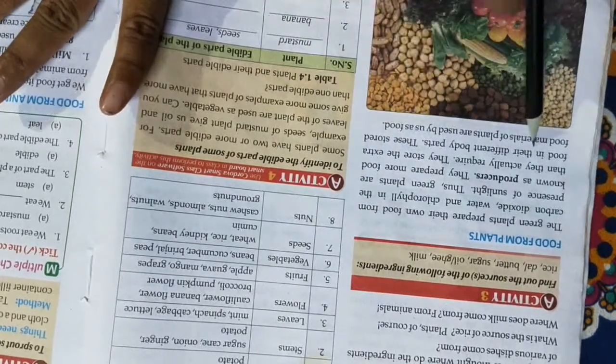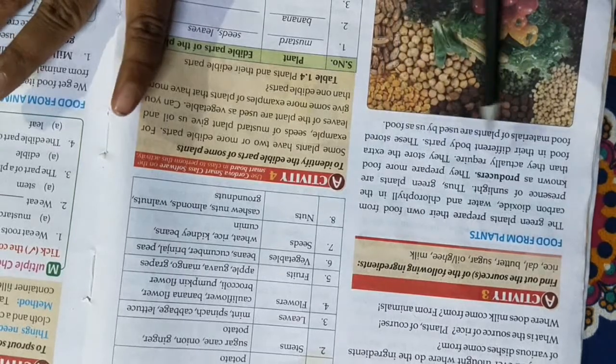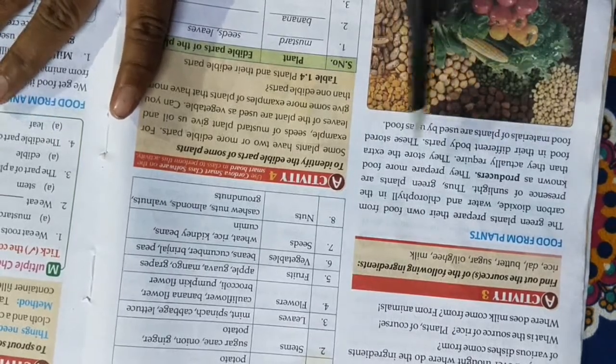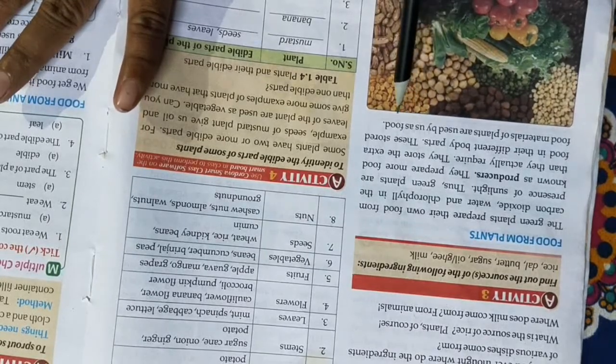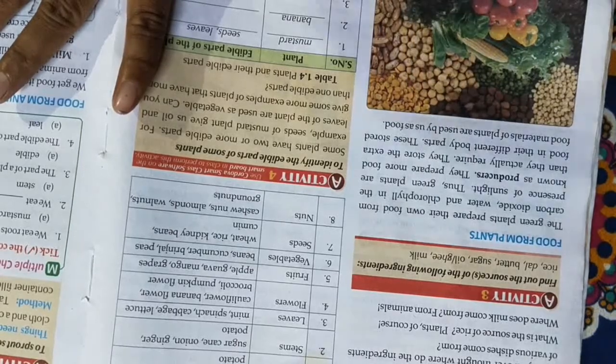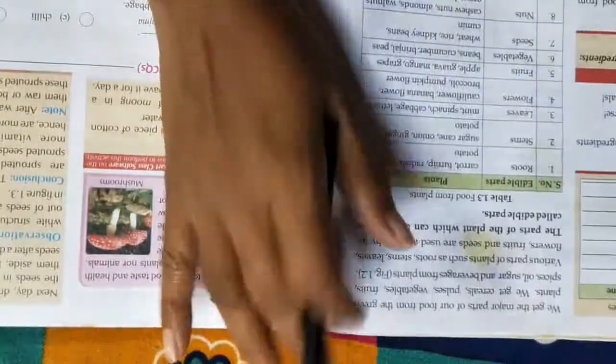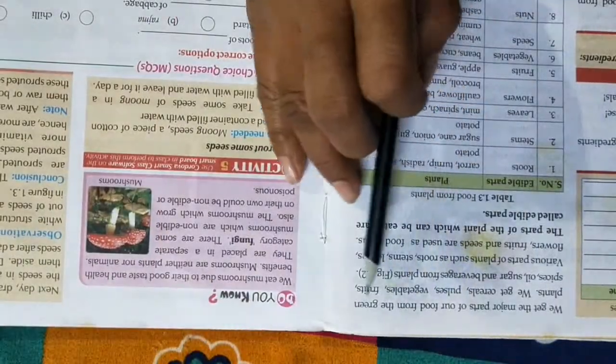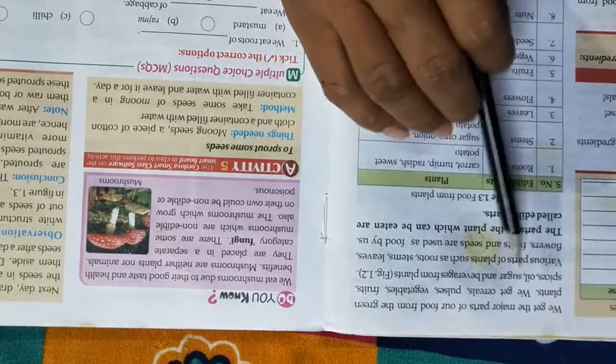They store the extra food in their different body parts. We get major parts of our food from green plants. We get cereals, pulses, vegetables, fruits, spices, oil, sugar, and beverages from plants.